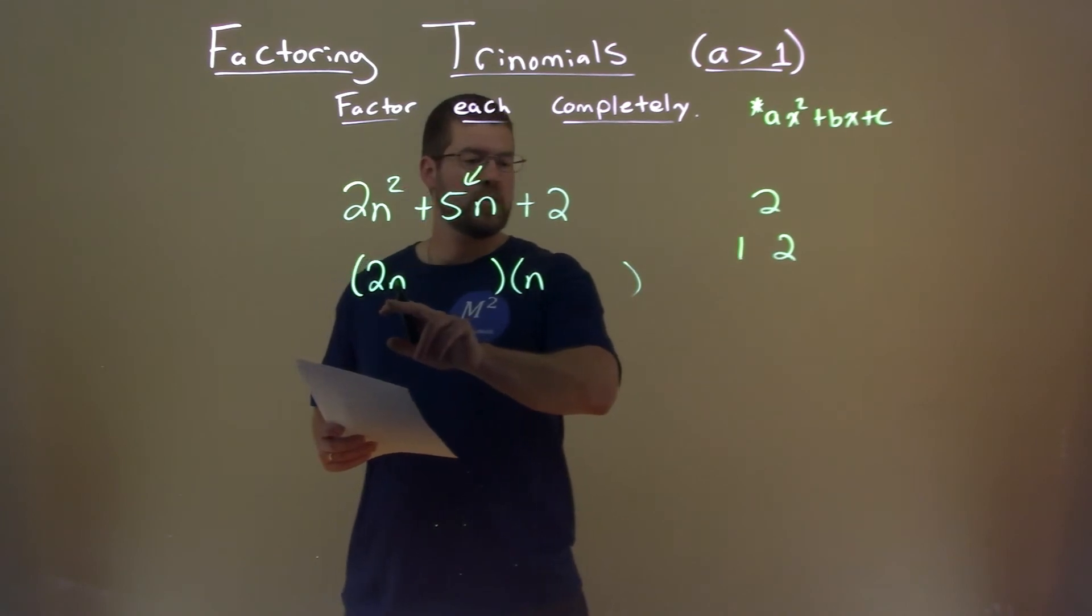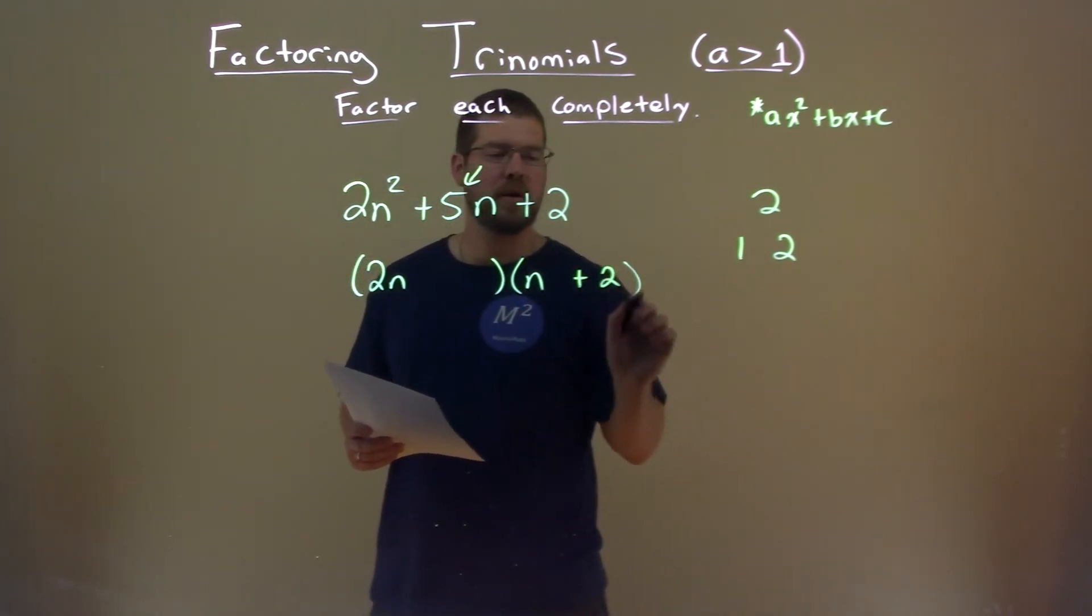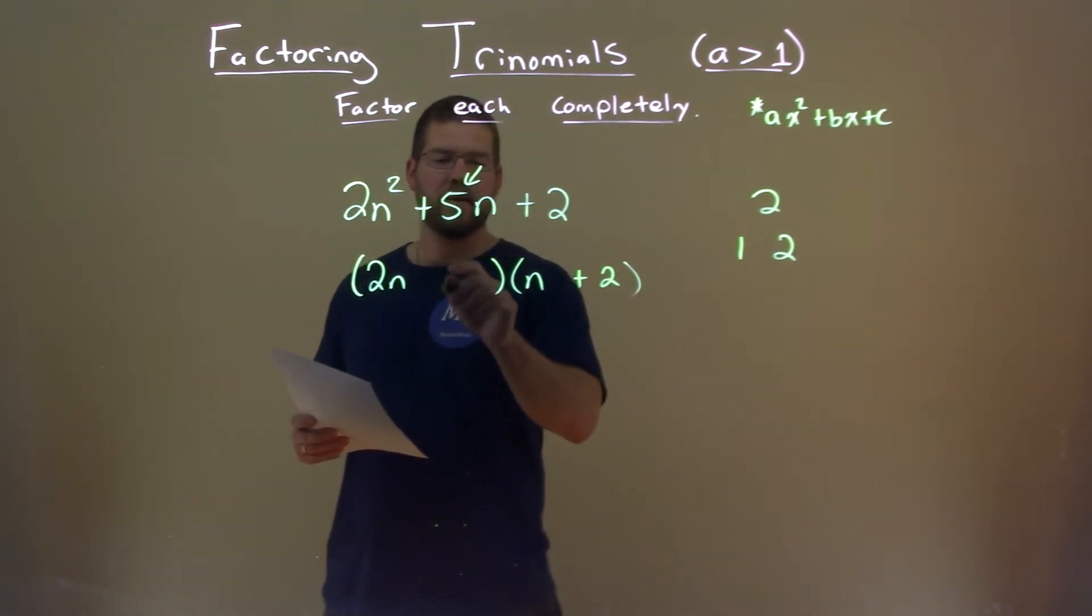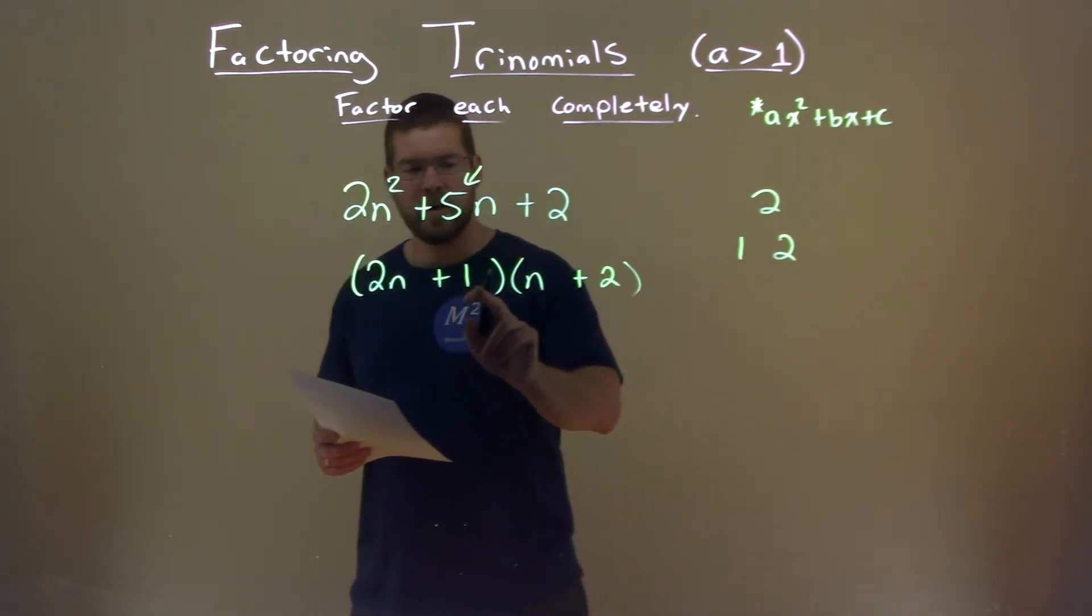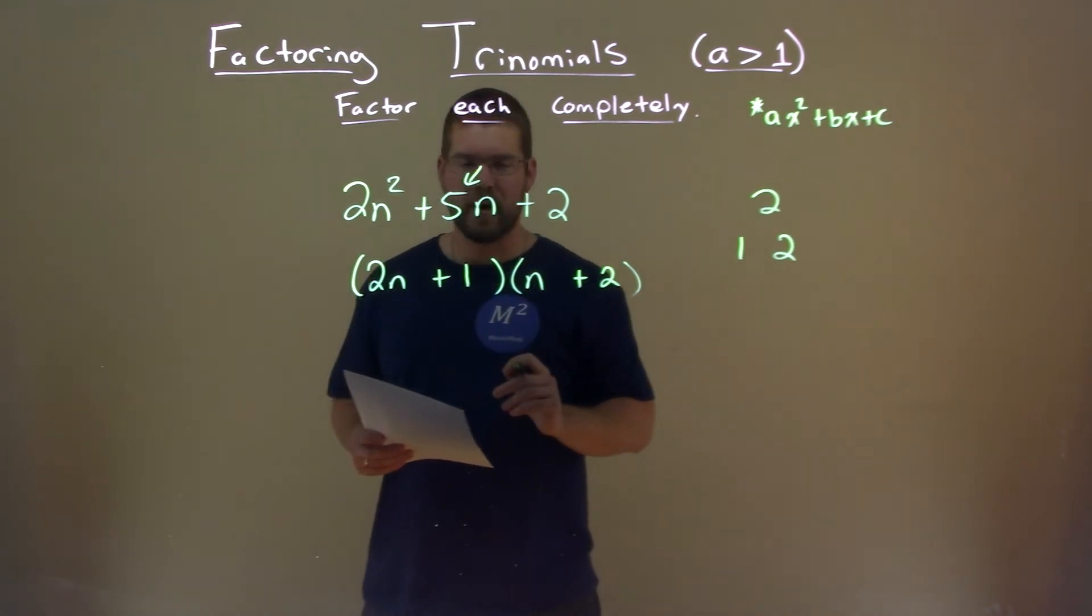So opposite of where the 2n is, I have to put this 2 right here. And then right here, I put the 1. And so 2n times 2 is 4n plus 1 times n, which is 5n.